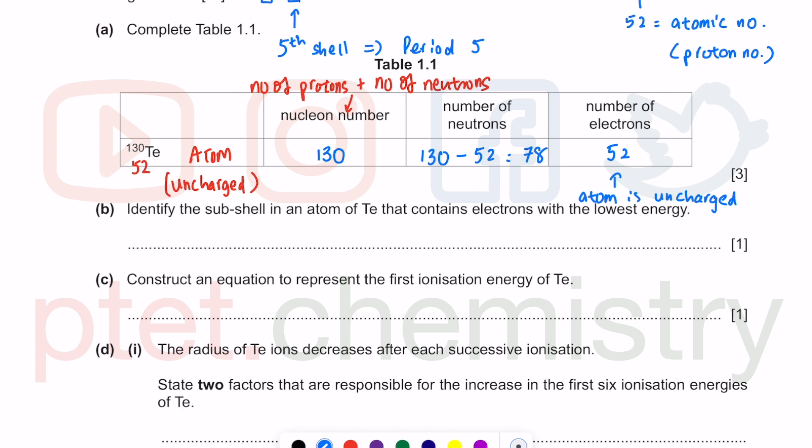In part b, identify the subshell - the means there is only one answer. This is an atom of Te with the lowest energy. We fill the lowest energy orbital first, so we have to go to the lowest energy subshell, which is 1s. The one refers to shell number one, the lowest energy level closest to the nucleus.